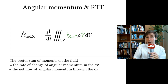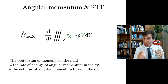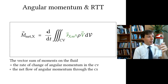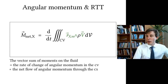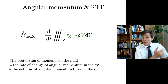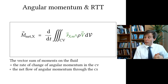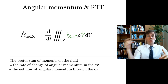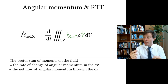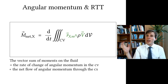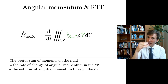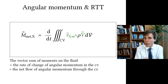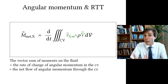This net moment equals the rate of change of angular momentum of the fluid inside the bottle. There is no inlet or outlet in this case, but you could also have a control volume where flow is coming in and going out, and every time flow passes through, it carries angular momentum with it.